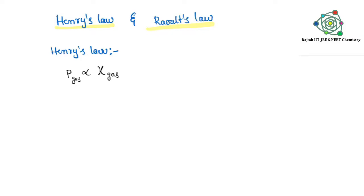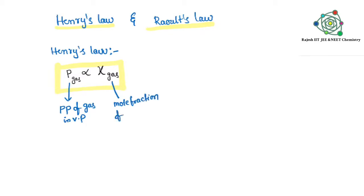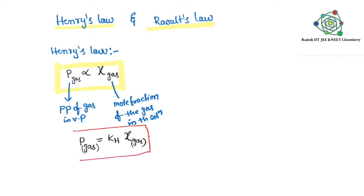First, let's take Henry's law. Henry's law simply states that the partial pressure of a gas in the vapor phase is directly proportional to the mole fraction of the gas in the solution. Removing the proportionality, we can write: P(gas) = KH × χ(gas in solution). This is the mathematical representation of Henry's law.